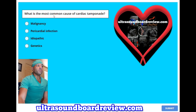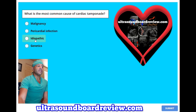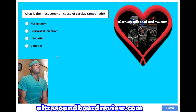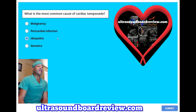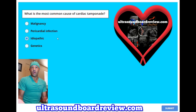What is the most common cause of cardiac tamponade? A, malignancy; B, pericardial infection; C, idiopathic; or D, genetics? The answer is C, idiopathic. Idiopathic means that the cause of a disease is unknown.